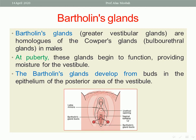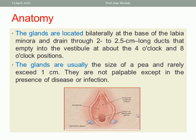The Bartholin glands develop from buds in the epithelium of the posterior area of the vestibule. The glands are located bilaterally at the base of the labia minora and drain through 2 to 2.5 centimeter long ducts that empty into the vestibule at about the 4 and 8 o'clock positions. The glands are usually the size of a pea and rarely exceed 1 centimeter.